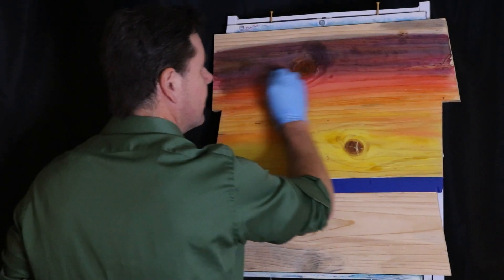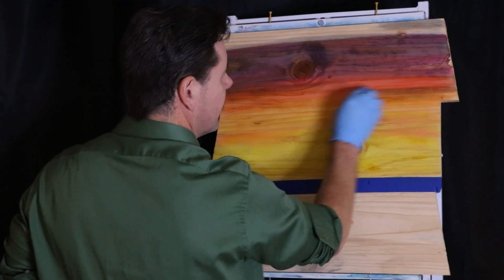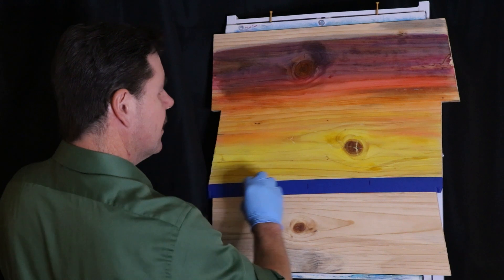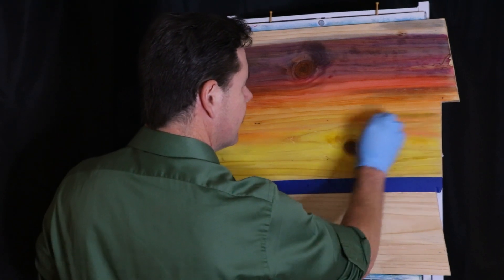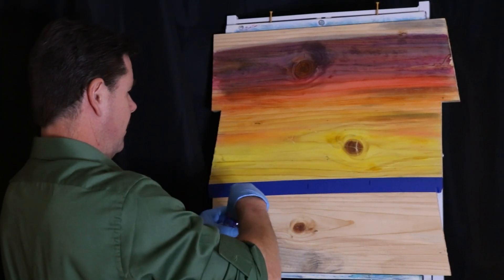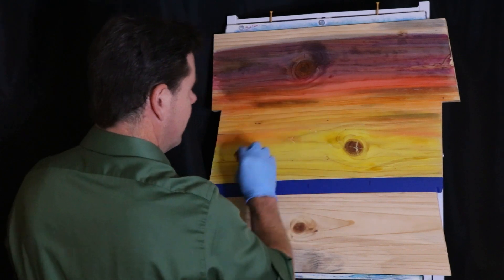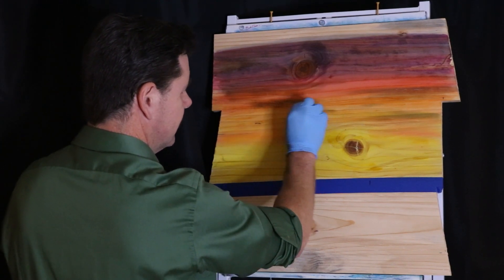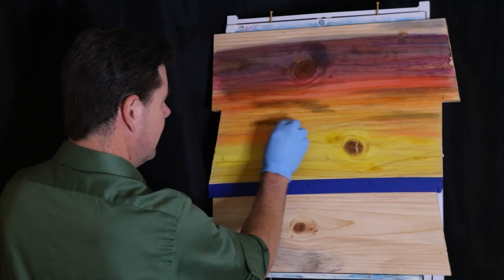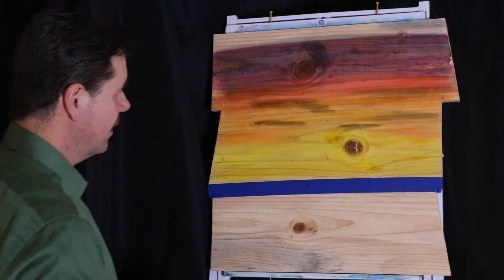And give it a little accent colors there. Maybe it's like a little cloud, huh? What would Bob Ross say? A happy little cloud? Come in with that a little bit, make it a little more interesting. Maybe I do want a couple blotch marks just for a little cloud effect. Let's roll with that.